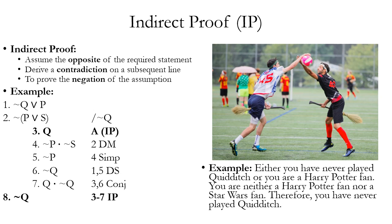After we've generated that contradiction, we exit out of the indirect proof. Line eight is flush with the original premises — not indented. What we put on that line after we exit is the negation of our assumption. In this case, we assumed Q, so when we exit out it's going to be tilde Q. When we make our initial assumption on line three, we cite it with capital A for assumption and IP for indirect proof in parentheses, to distinguish it from a conditional proof assumption. When we exit the scope of our assumption on line eight, the justification for tilde Q is lines three through seven IP — all the indented lines with the indirect proof rule.